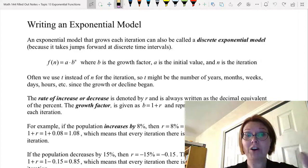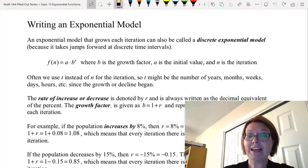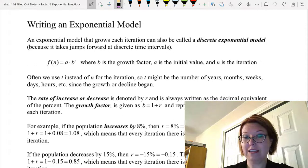We write that f(n) equals a times b to the n, where b is the growth factor, a is the initial value, and n is the iteration.